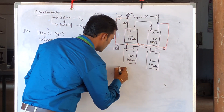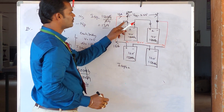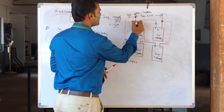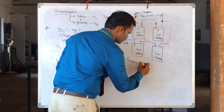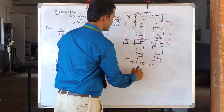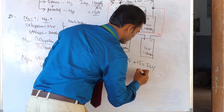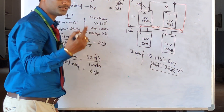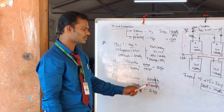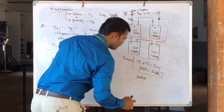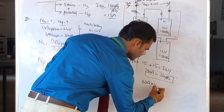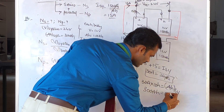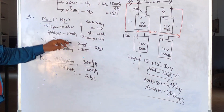Now let's calculate the total AH capacity of the system. System current is 30 Amperes, and we operate for 10 hours. So total AH = 30 Amperes × 10 hours = 300 AH. This matches exactly the AH capacity of the system given in the problem — 300 AH.